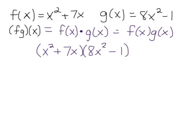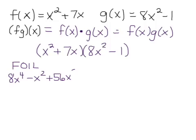Some people use the acronym FOIL. You multiply the first two terms together to get 8x to the 4th. You multiply the outer two terms — x squared times negative 1. You multiply the two inner terms to get 56x cubed. And you multiply the last two terms to get negative 7x.